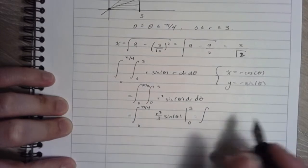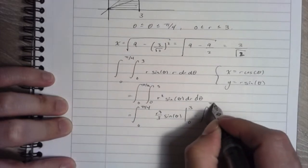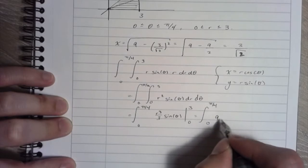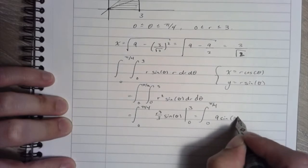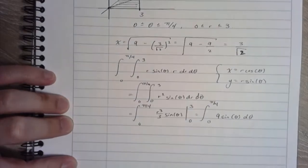So this is going to be, and if I plug in 0, I get 0. So this is 0 to pi over 4, 9 sine theta, d theta. Now I'm integrating with respect to theta.